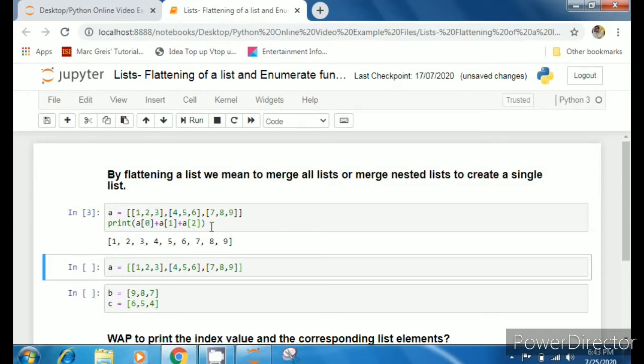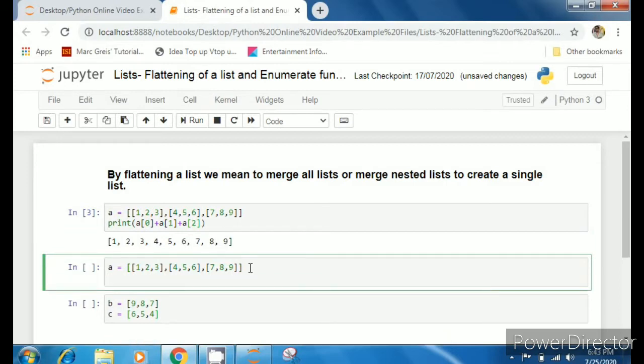The drawback is that if there are so many lists, up to say 100, then this method can be cumbersome: a[0] plus a[1] plus a[2] plus a[3] up to a[100]. To avoid this we can use another method, another technique using sum.